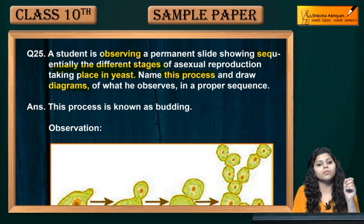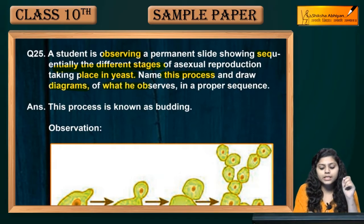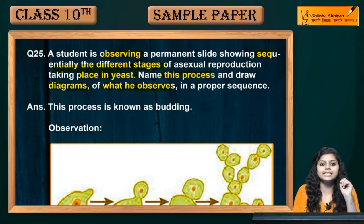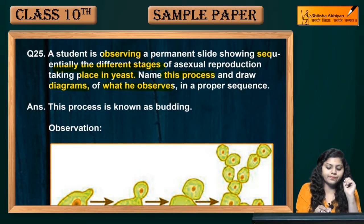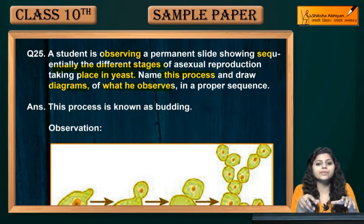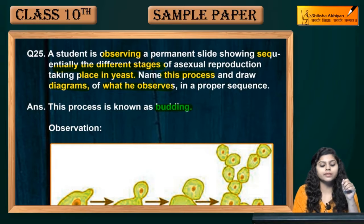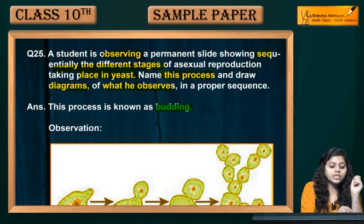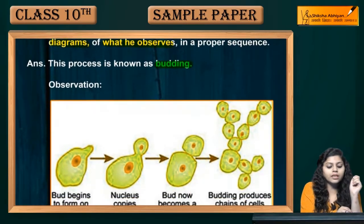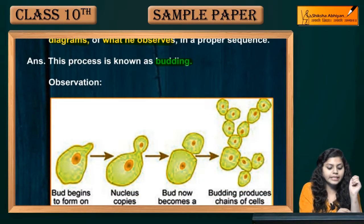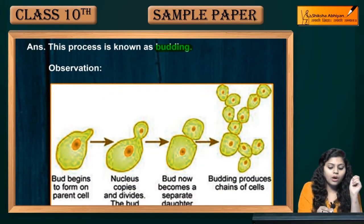Draw a diagram of what he observes in proper sequence. First of all, what is in yeast? Budding is the type of asexual reproduction that occurs in yeast.